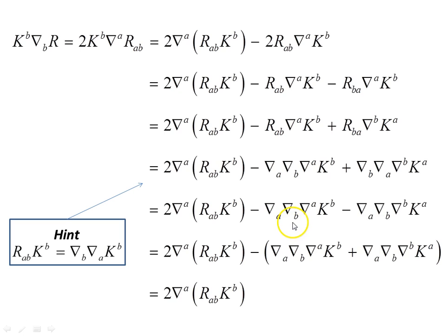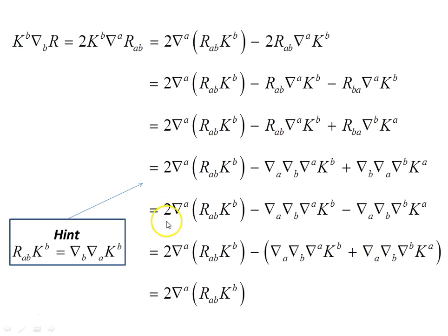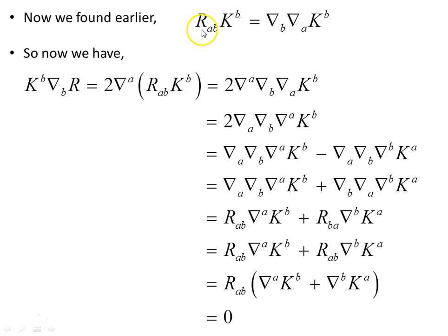Next, we swap the order of these covariant derivatives, which introduces a minus sign. Then we factorize out the minus sign. Ultimately, this is just two covariant derivatives of the Killing equation — and we know the Killing equation goes to zero. So that bit drops out, and we're left with just this object: the covariant derivative of the Ricci scalar in the direction of the Killing vector equals this.